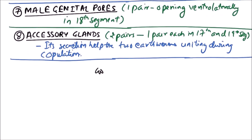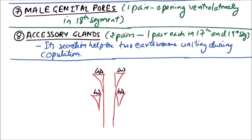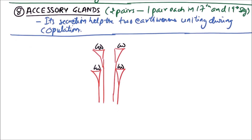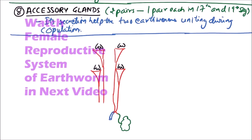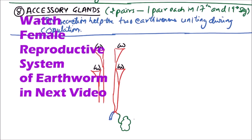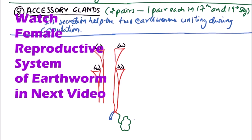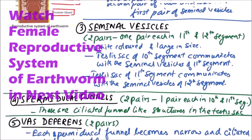In the male reproductive system, two pairs of testis are found, all connected with one spermiducal funnel each. The spermiducal funnel continues as vas deferens, and the prostate gland also gives a duct. Both the vas deferens and the duct of the prostate gland fuse to form a common duct, which opens ventrally on the ventral surface of the body as the male genital pore. This is the male reproductive system of the earthworm.